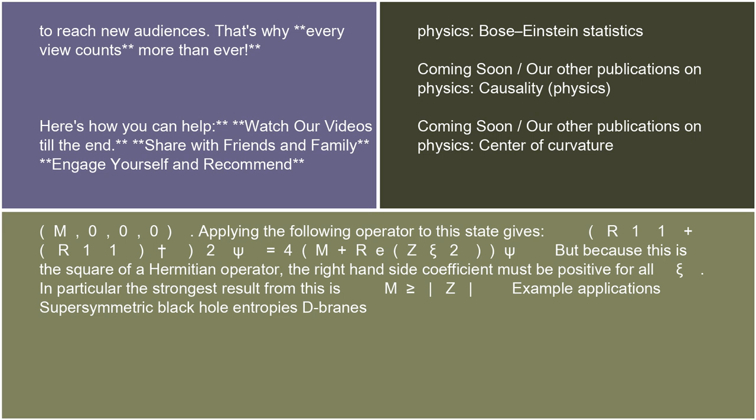{R_11 + R_11†}^2 |psi> = 4(m + Re z)|psi>^2. But because this is the square of a Hermitian operator, the right-hand side coefficient must be positive for all psi. In particular, the strongest result from this is m >= |z|. Example applications include supersymmetric black hole entropy and D-branes.